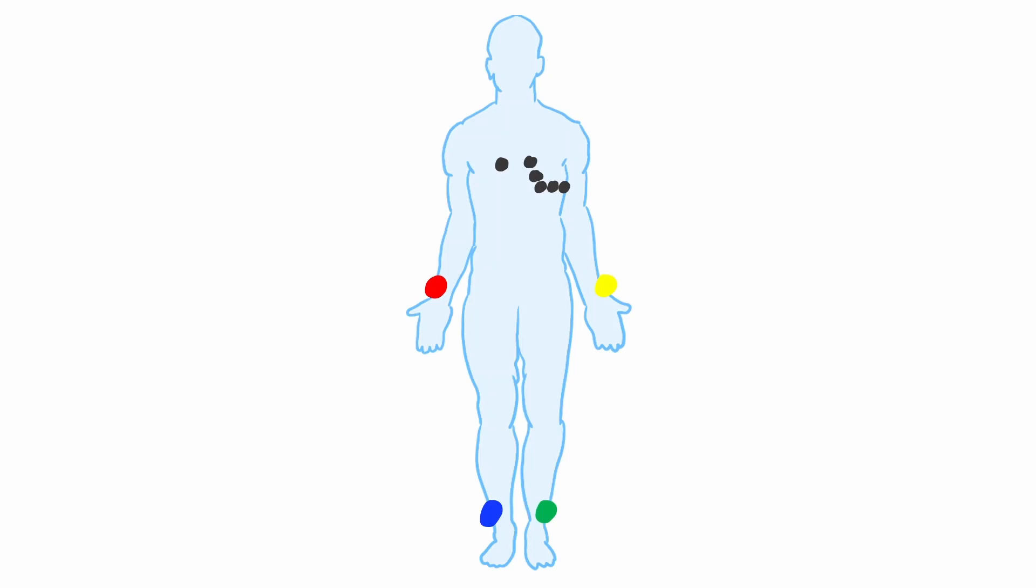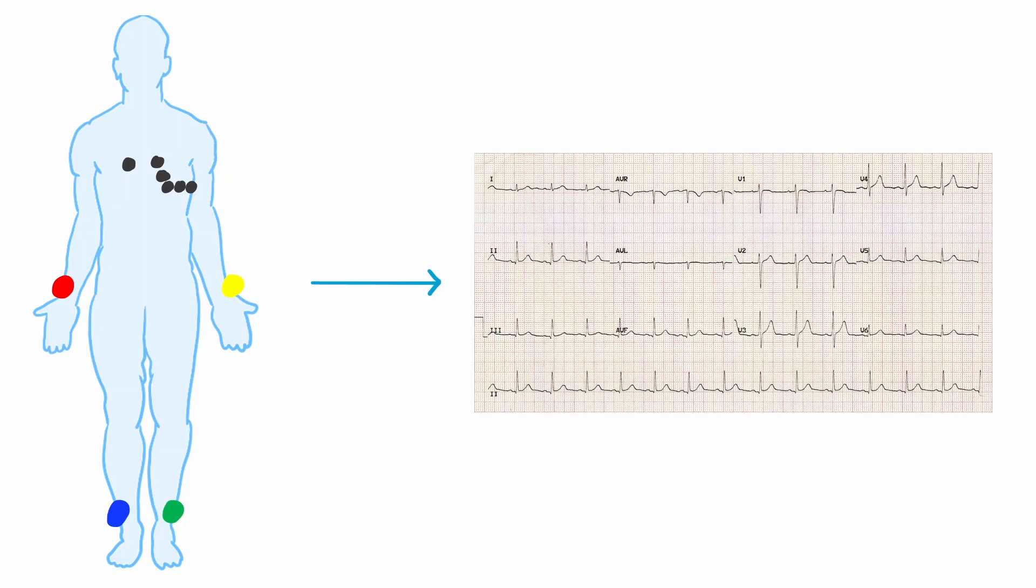When referring to ECGs, an electrode is the conductive sticker that's placed on the skin that detects electricity, whereas a lead is the graphical representation of the electrical activity coming from the heart in a specific direction. 10 electrodes will produce a 12-lead ECG, which is what you will commonly come across in practice and in medical school exams.